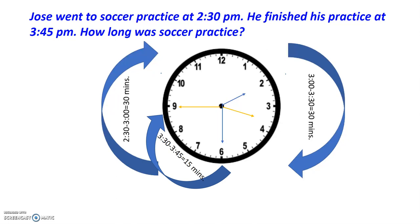3:30 to 3:45 is 15 minutes. 30 minutes plus another 30 minutes is equal to an hour.